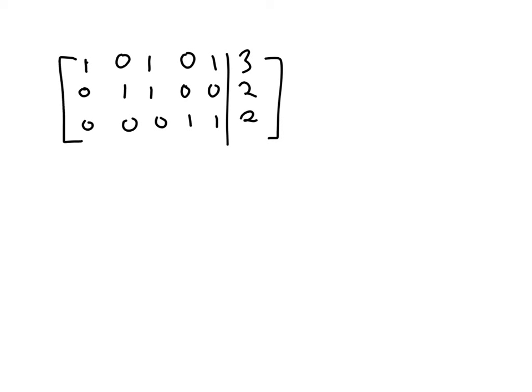I now want to take this matrix that's in reduced row echelon form and use it to describe the solution set to the system of equations.